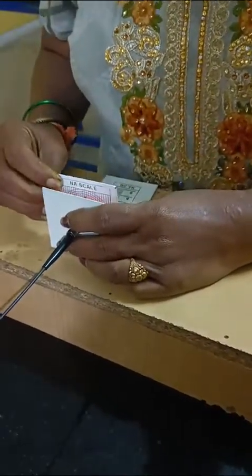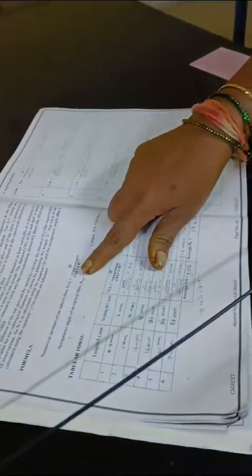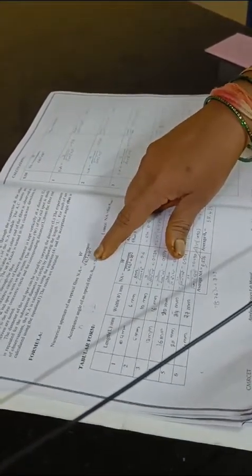Now, how do we calculate numerical aperture? We have a formula: numerical aperture equals W divided by the square root of 4L² plus W², where L is the length.